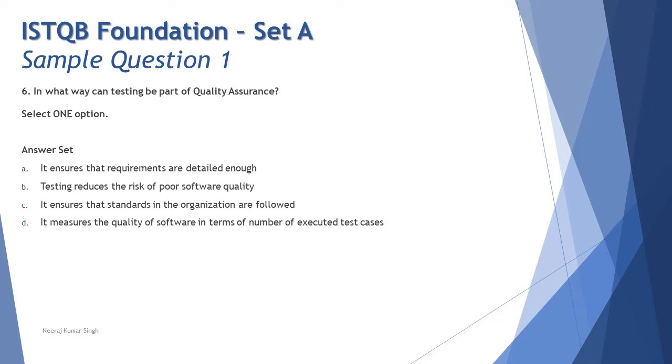Let's look at the options. We got the difference. Option A: It ensures that the requirements are detailed enough. Now I think that's something more relevant to static testing, because static testing can help you review the work products. As part of reviewing the work products, you would identify if everything is broken down into the understandable format and has any kind of anomalies, inconsistencies, contradictions, and such types of defects. So I think that's more related to what we do in static testing. Option B: Testing reduces the risk of poor software quality. Exactly, I think that's more relevant as of now when you say quality assurance.